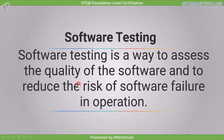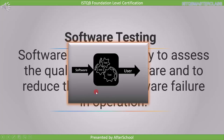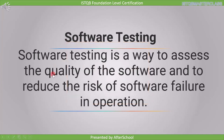In this syllabus, we need to understand testing in the context of software. That means we will discuss only software testing, not hardware testing or electrical testing. Software testing is a way to assess the quality of the software and to reduce the risk of software failure in operation. Once the developer develops software, it is not directly given to the user. Before giving it to the user, the software undergoes a process to find out the defects and risks associated with it — and this process is called testing. By finding defects, we increase the quality of the software and reduce the associated risk.